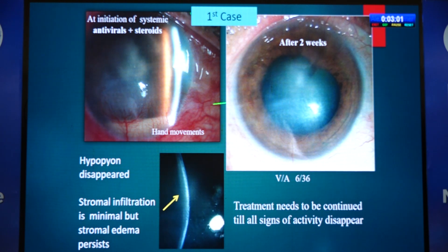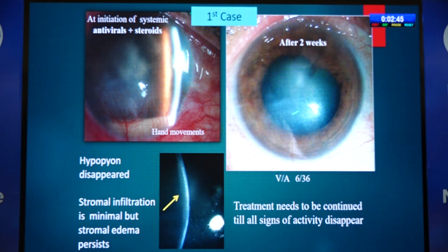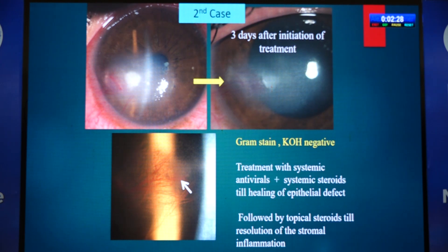While the infiltration has gone, if a slit lamp shows edema persisting, do not stop treatment suddenly — continue a little while longer until both infiltration and edema resolve. In a second case, three days after initiation of antivirals and systemic steroids — with topical steroids avoided due to epithelial defect — the patient cleared remarkably. Treatment must be continued for a longer time because stopping early allows inflammation to smolder, leading to tonic vascularization and later lipid keratopathy.